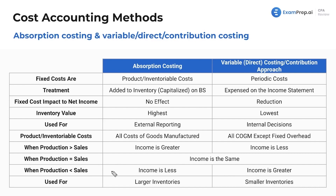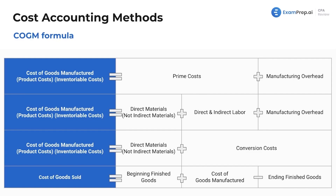Take a second, re-listen to that if you need to, or you can just memorize it. Absorption costing is used for larger inventories if you want a larger inventory balance. Variable direct method is used if you have a smaller inventory or want a smaller inventory balance. We're revisiting prime costs, conversion costs, and cost of goods manufactured from our fundamentals lesson — make sure you have these memorized, as they're quite important.